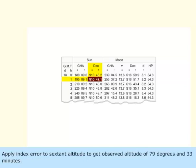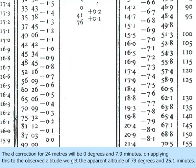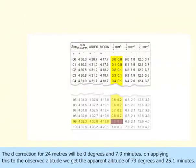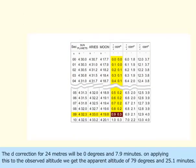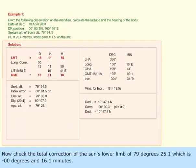Apply index error to the sextant altitude to get observed altitude of 79 degrees and 33 minutes. Dip correction for 20.4 meters will be 0 degrees and 7.9 minutes. On applying this to the observed altitude, we get the apparent altitude of 79 degrees and 25.1 minutes.